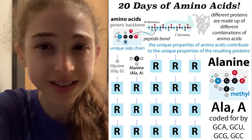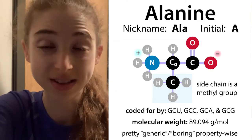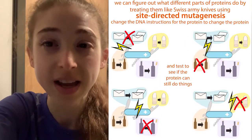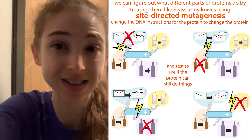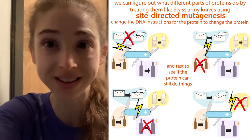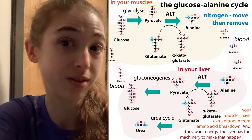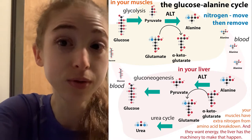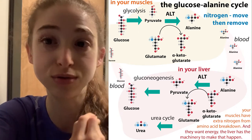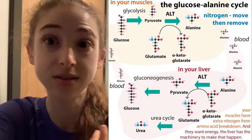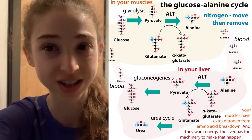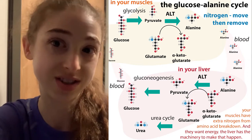Alanine is the most generic of amino acids with only a methyl or CH3 group as its side chain, but that doesn't mean it doesn't play important unique roles. Its genericness makes it really useful in the lab for things like an alanine scan - changing amino acids to alanine to figure out what they do. It also plays special roles in the body through the glucose-alanine cycle, acting like a trash cycling system where muscle cells send waste to liver cells, which dispose of it and send back glucose for energy.